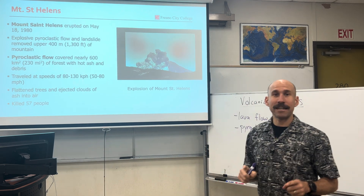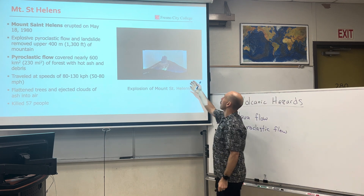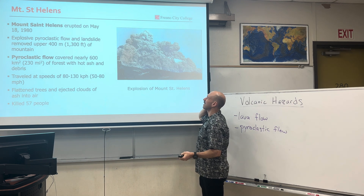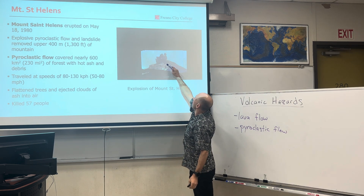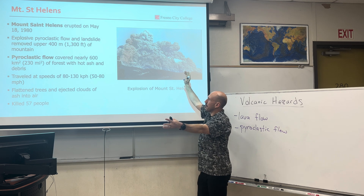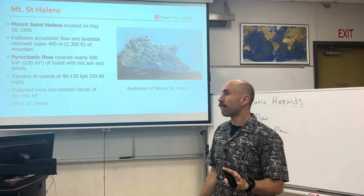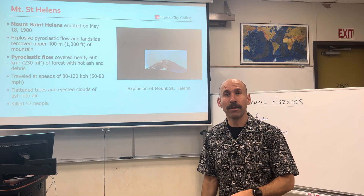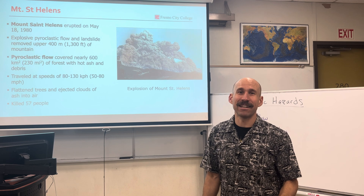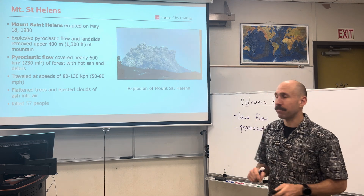Mount St. Helens, 1980 — a very famous example of a pyroclastic flow from the eruption of a composite volcano. This is a series of photos taken over about 16 seconds, where the pyroclastic flow is moving down the side of the hill, and then all of the ash completely envelops it. Flattened trees, lots of ash in the air. This unfortunately killed 57 people who didn't see it coming and were in harm's way. Volcanic hazards are dangerous and deadly, and they are worth thinking about when you select a place to live.